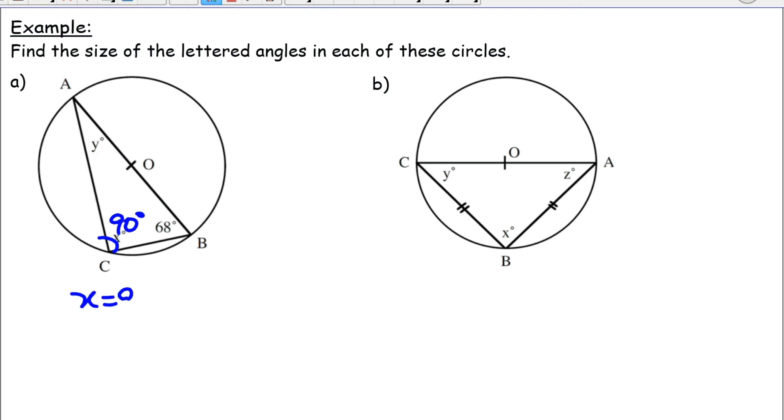X is equal to 90 degrees. If X is equal to 90 degrees, Y will be equal to 180 minus 90 plus 68, which means Y will be equal to 22 degrees.